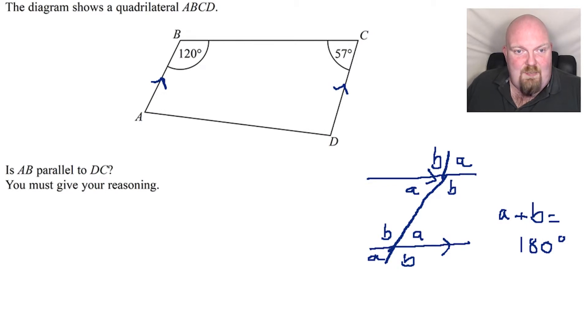So is AB parallel to DC? Well, the calculation that I need to do is 120 add 57. 120 add 57 is 177. That does not equal 180. Because it does not equal 180, it is not.